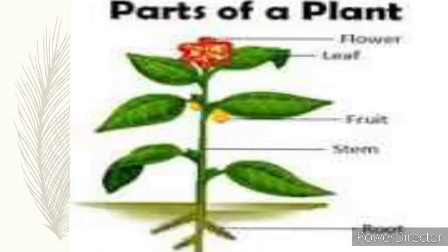Let's look at the parts of a plant. Did you know that in a plant you can find a leaf? The parts of a plant are: flower, leaf, fruit, roots, and stem. All these are parts of a plant, and you know a leaf is also a part of a plant.